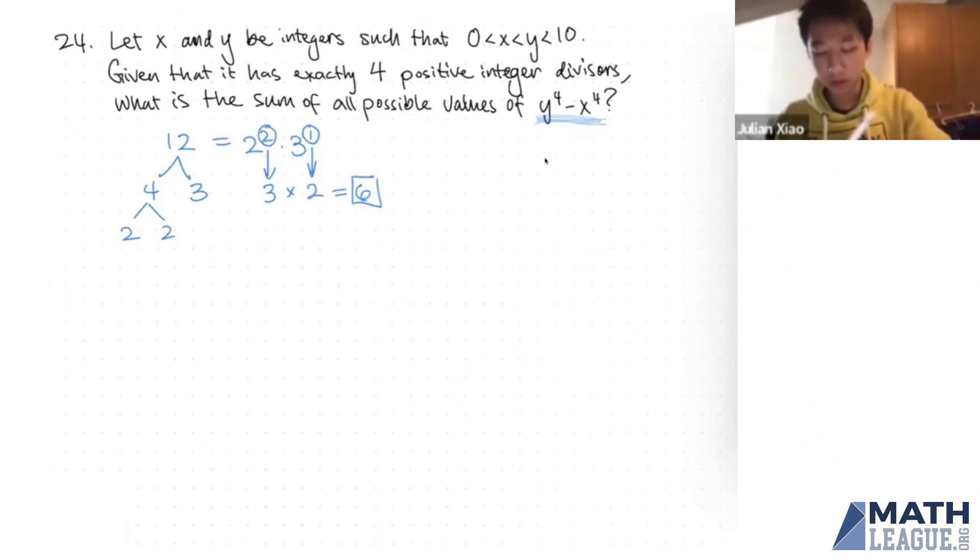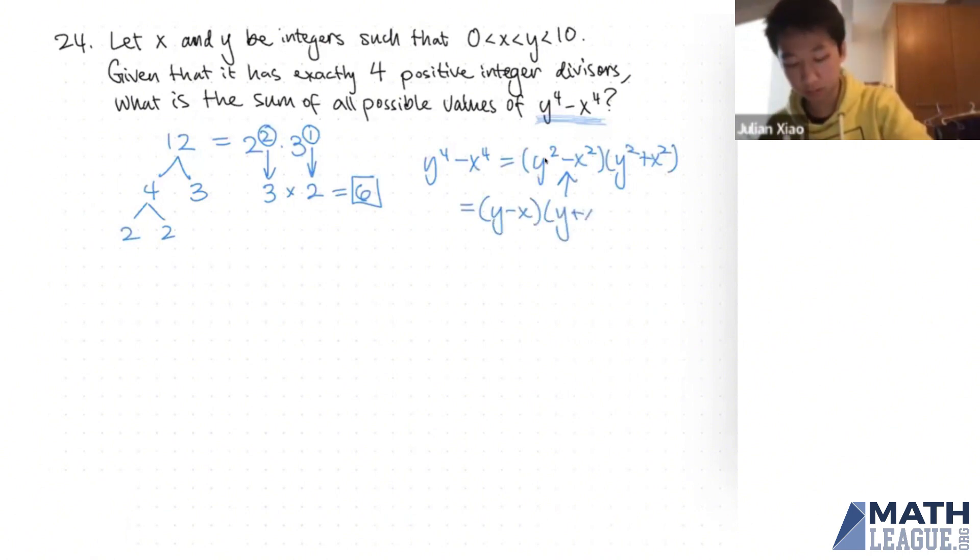So now let's take a look at this quantity y to the 4 minus x to the 4, which should have four positive integer divisors. We can first write this as a difference of squares, which is a very common algebraic strategy. So we're going to write it as a product like this. And you notice that this term right here is another difference of squares. So we can break this down yet again. I've shown that y to the 4 minus x to the 4 is a product of these three terms.